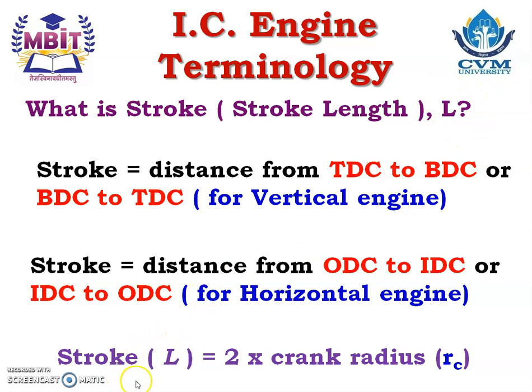Stroke length can be calculated using the equation 2 multiplied by crank radius. The crank radius is denoted by the symbol RC.